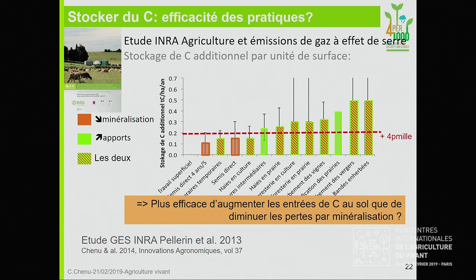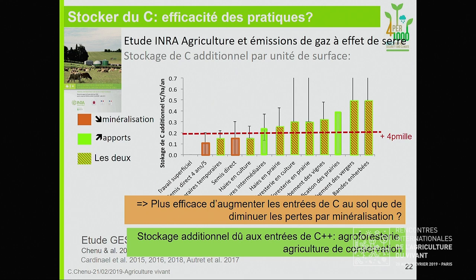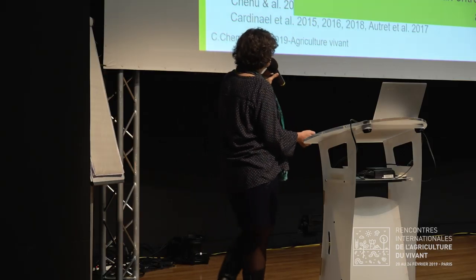Et c'est ce que nous avons confirmé lors de deux études récentes, l'une en agroforesterie, l'autre en agriculture de conservation, où nous avons montré que c'est l'augmentation des entrées qui expliquait les stockages additionnels observés, avec des augmentations de 35 à 40% de la quantité de carbone qui rentrait annuellement au sol — des augmentations relatives très importantes. Il faut donc surtout jouer sur les entrées.